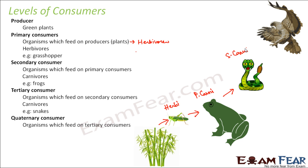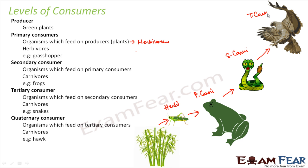The quaternary consumer is an organism that feeds on the tertiary consumer. Here, this snake is eaten by a hawk, which is again a carnivore because it feeds on another animal, but in this case it is a tertiary carnivore or quaternary consumer. When talking about carnivores, the primary level starts from the first carnivore, but when talking about consumers, the first level starts from the herbivore because herbivores are also consumers.